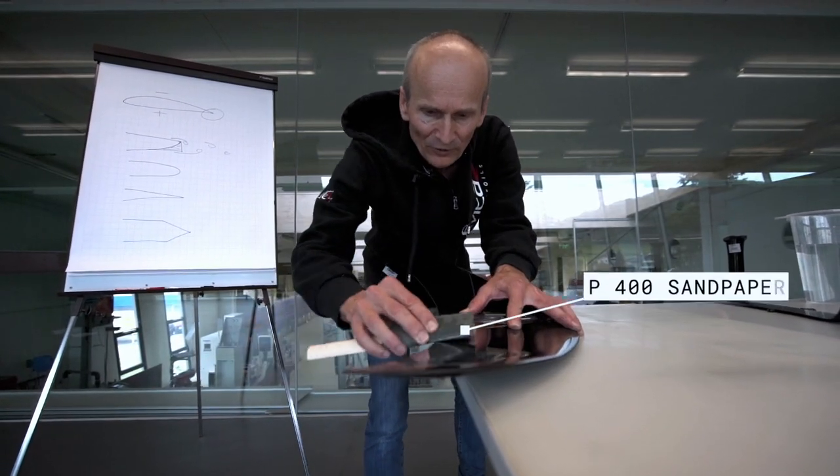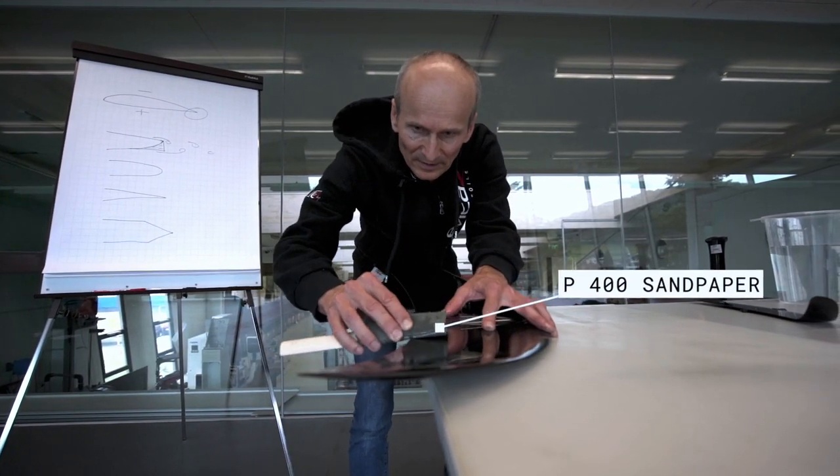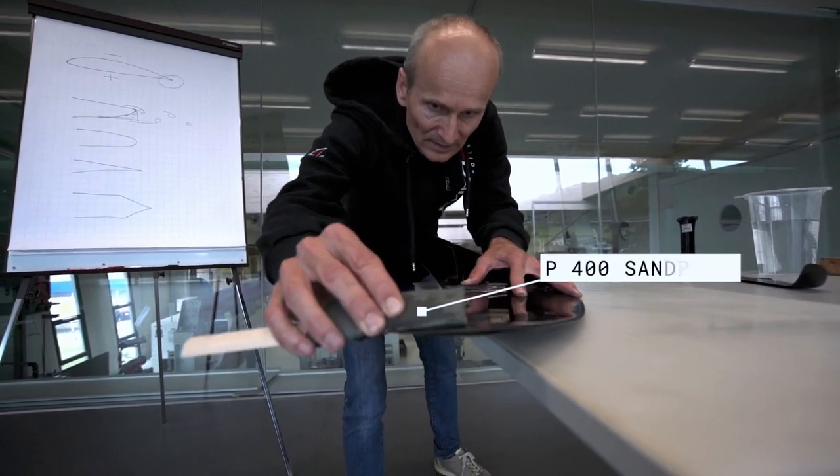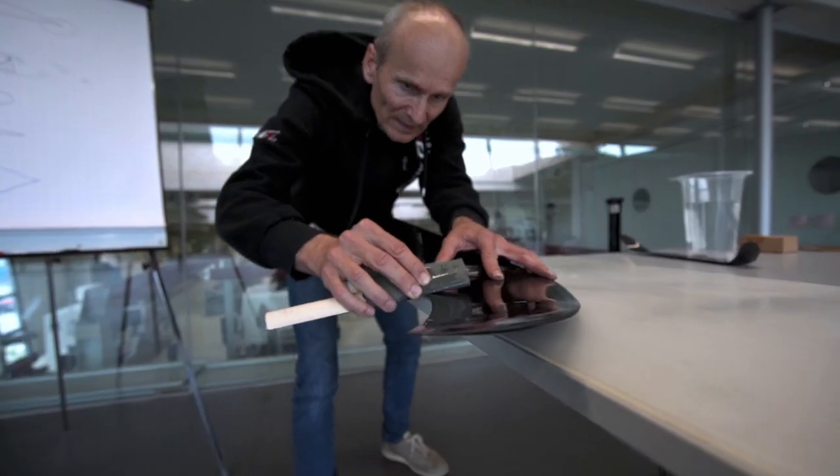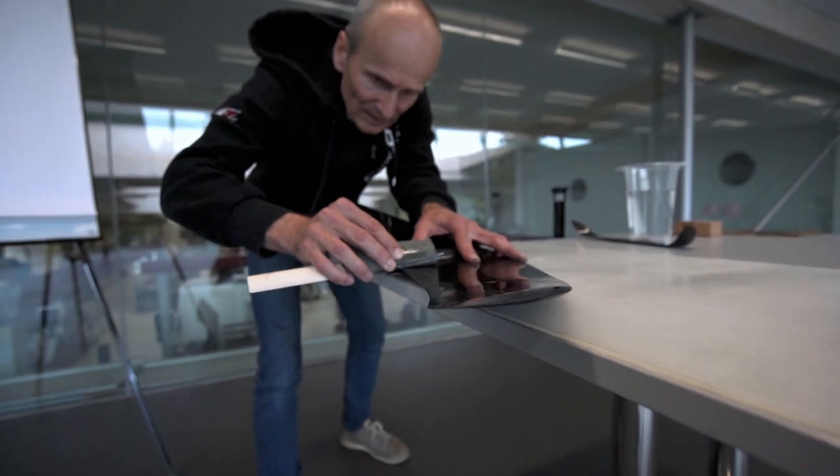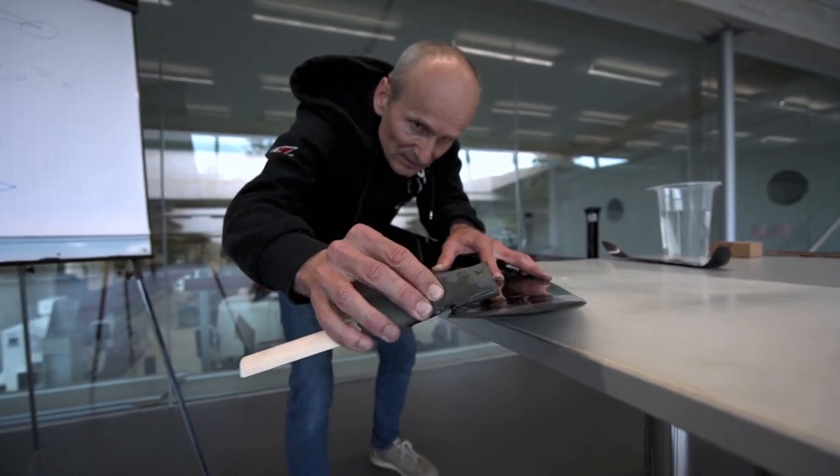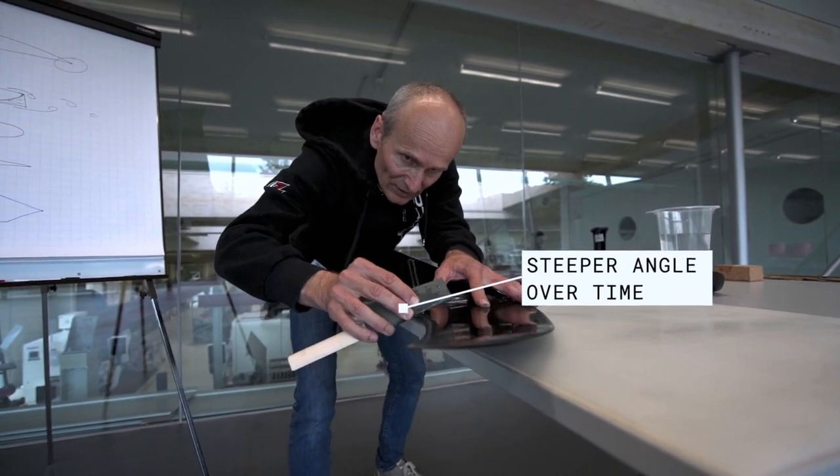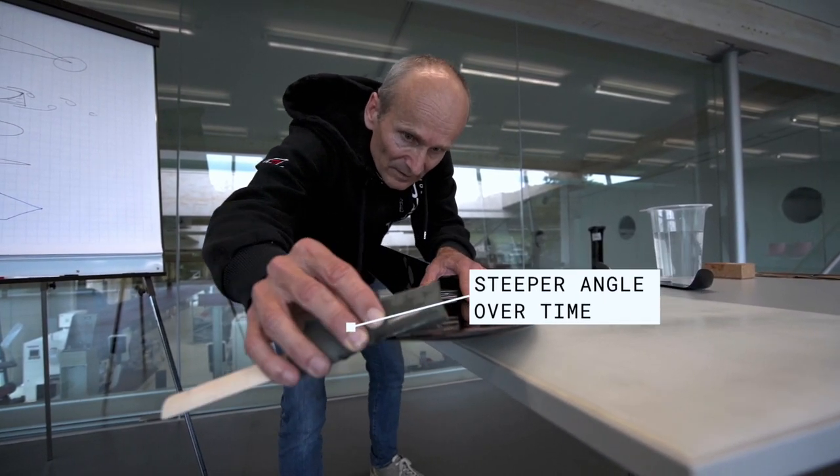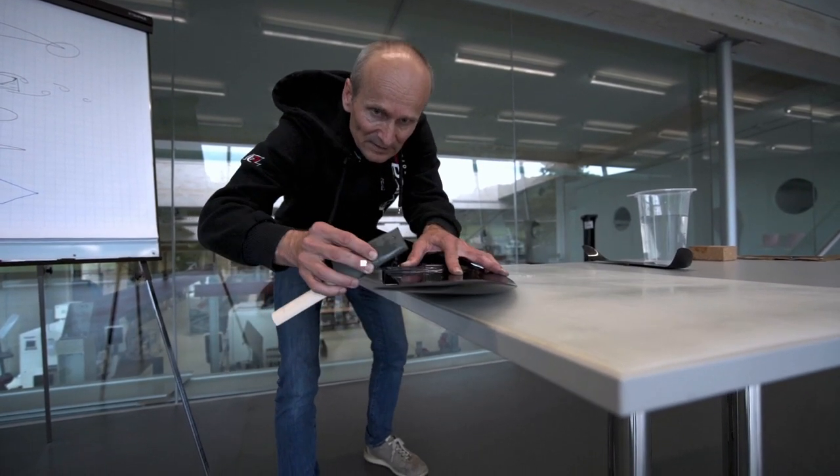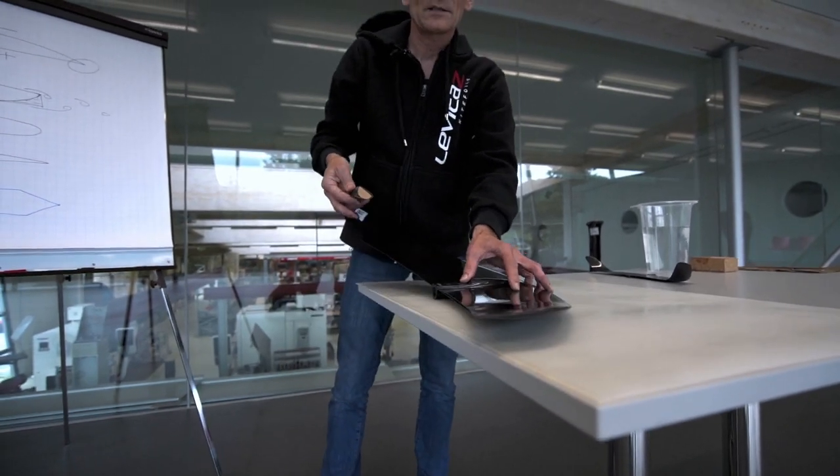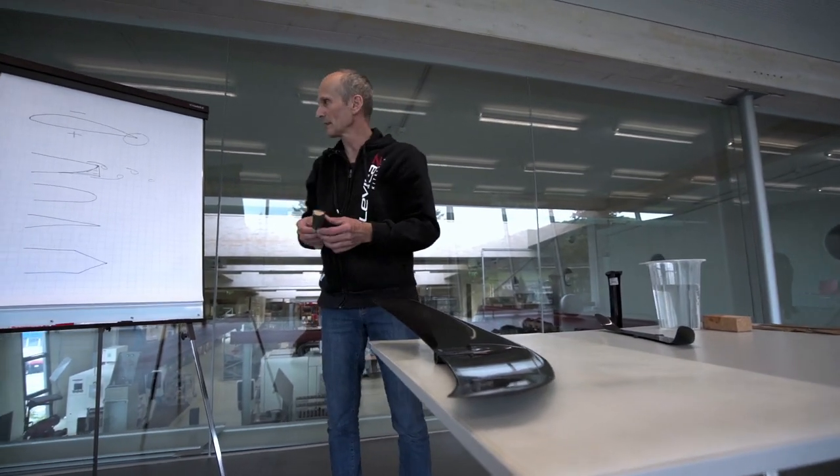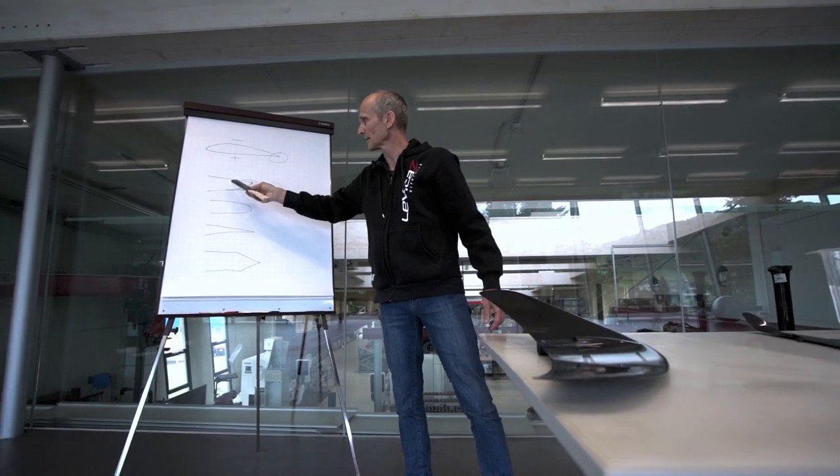So I start with 400 grit. And as I want to get a rounding, I change the angle how I sand the trailing edge over time. So in the end you'll get the so-called Donaldson trailing edge which will look like this.